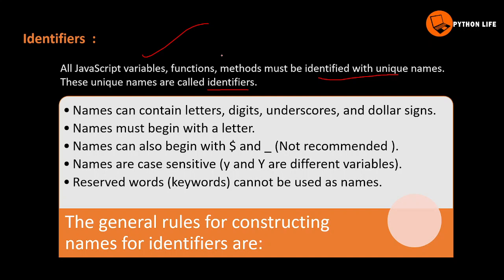If you want to call a function or reference a related function, then you need to know the additional code — it's called an additional call. If you want to use the same name, that is called polymorphism. The name is determined by the compiler or JavaScript engine. This is the concept of identifiers.